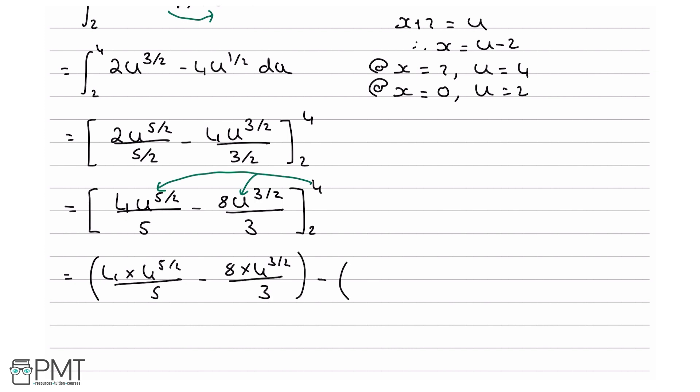Now what we need to do is plug 2 in for each of our u's, and we will get 4 times 2 to the 5 over 2 over 5, minus 8 times 2 to the 3 over 2 divided by 3.